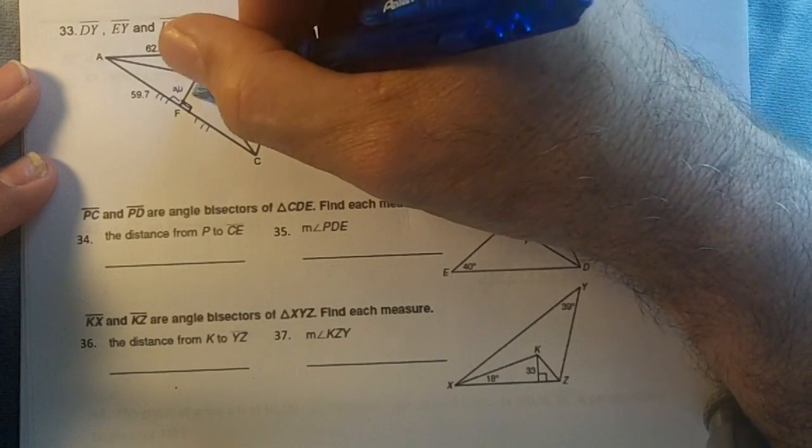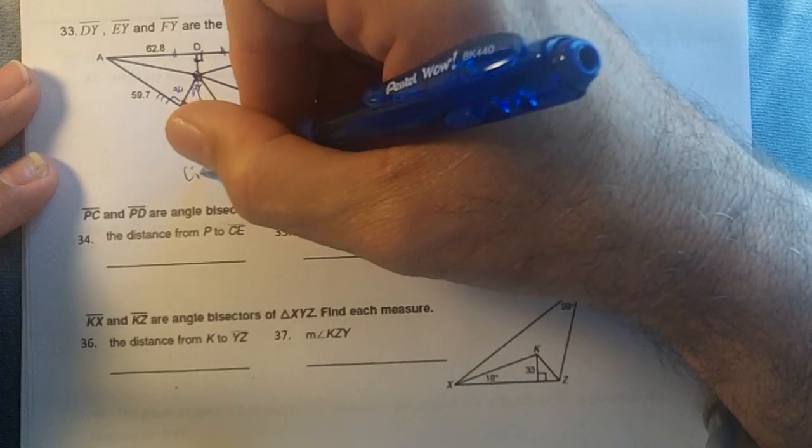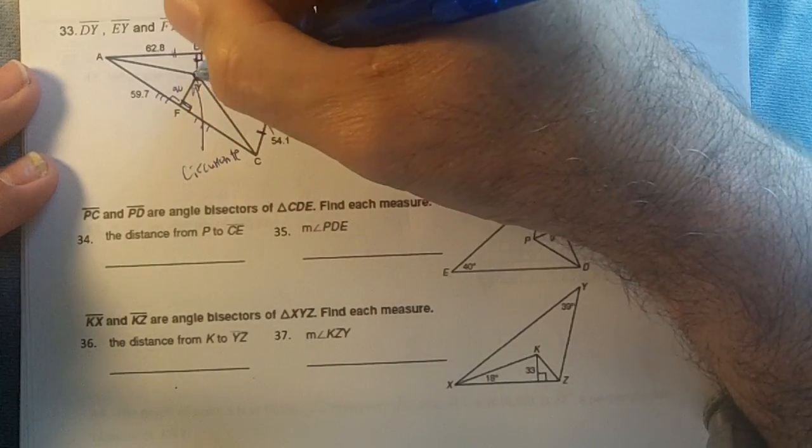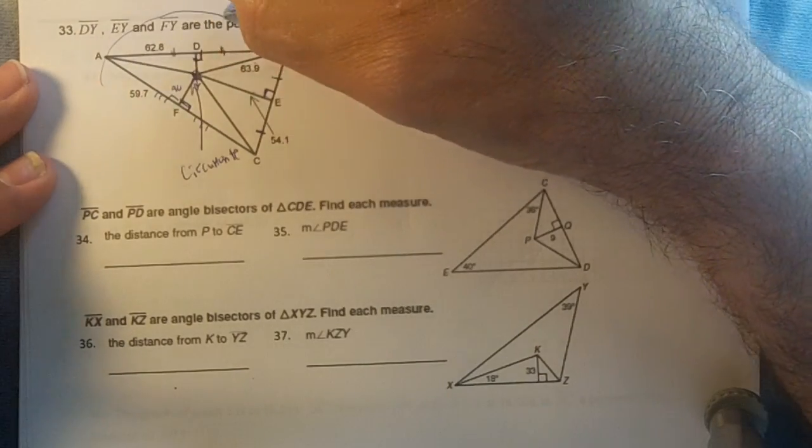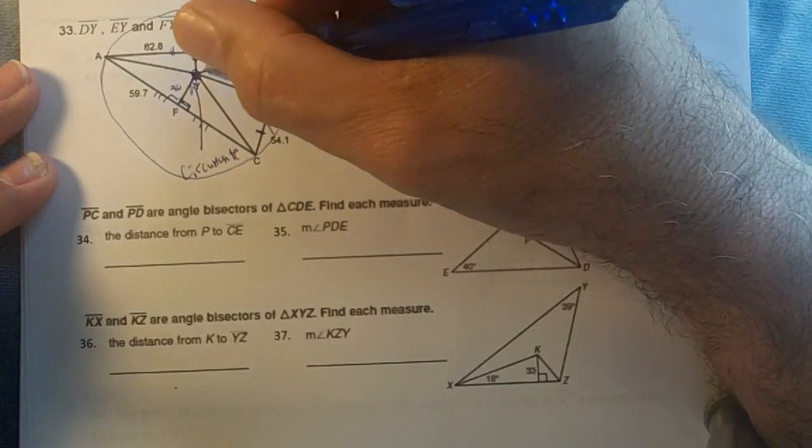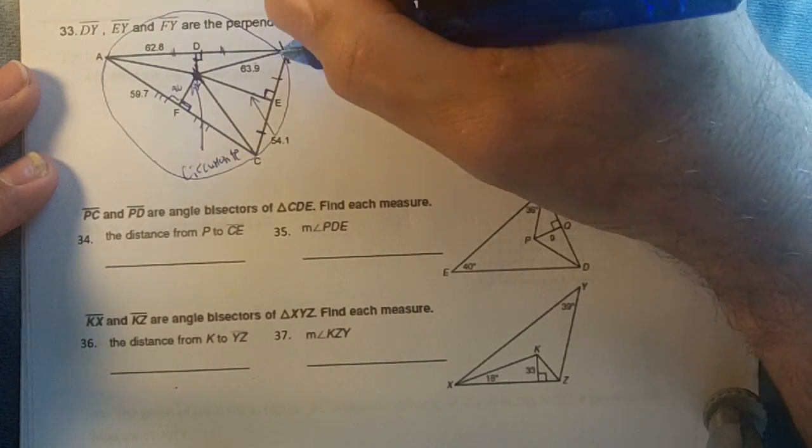Remember this is going to be our circumcenter. There's no math in this problem. If you were to take this center and draw a circle, the circumcenter, we go through here, right? From here to here is a radius.